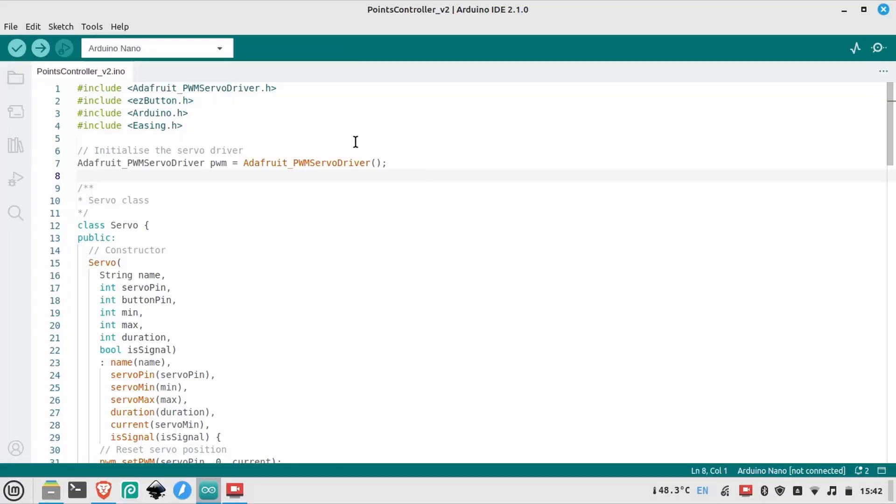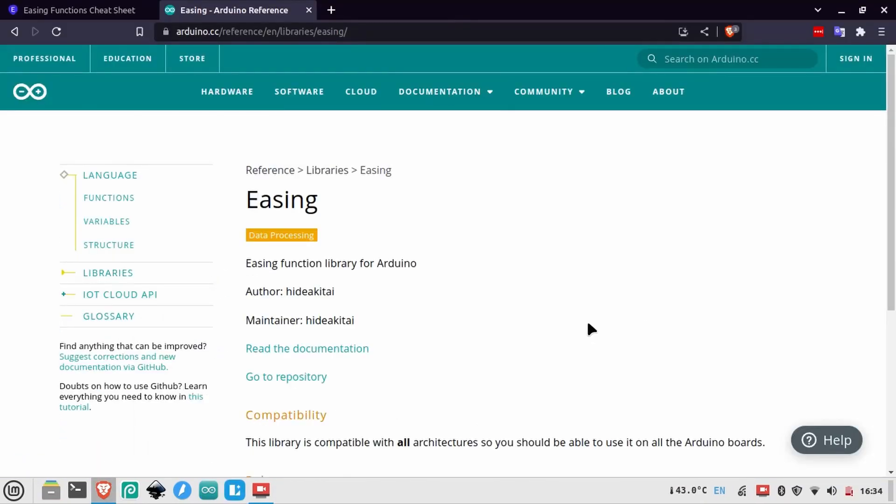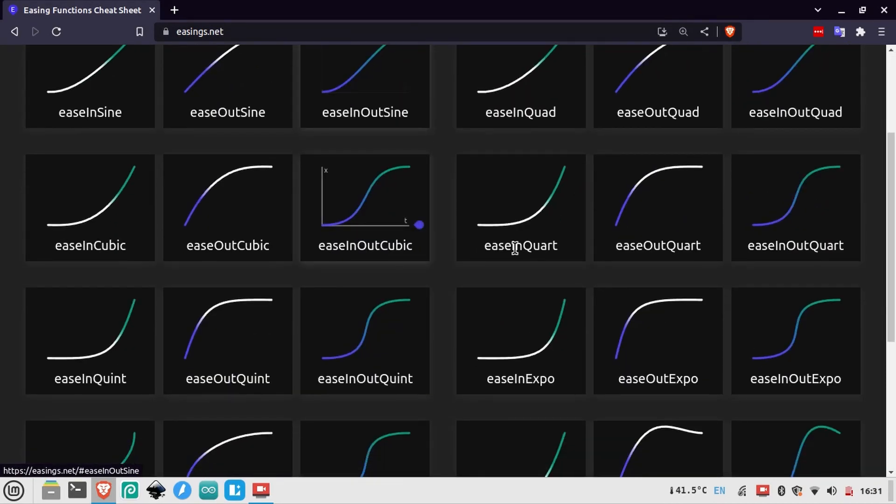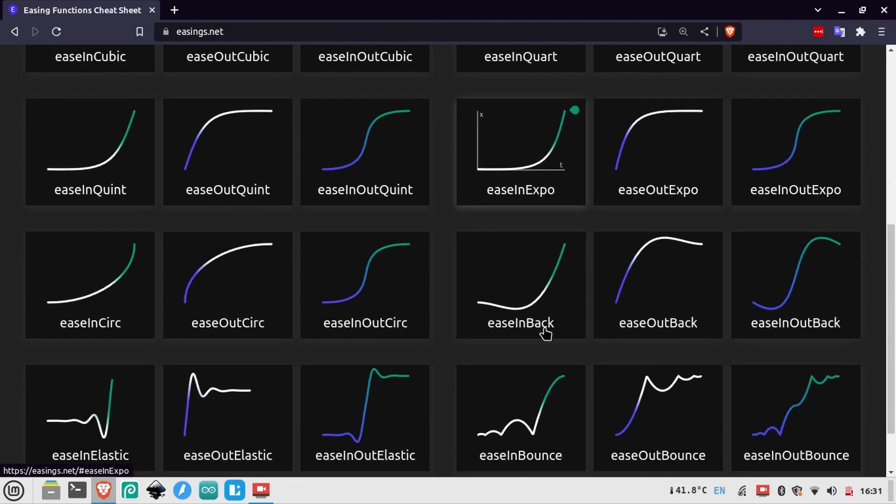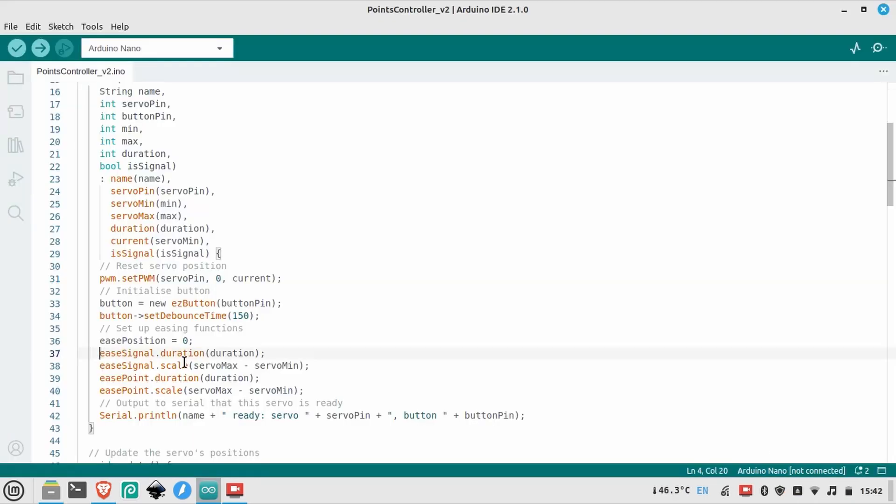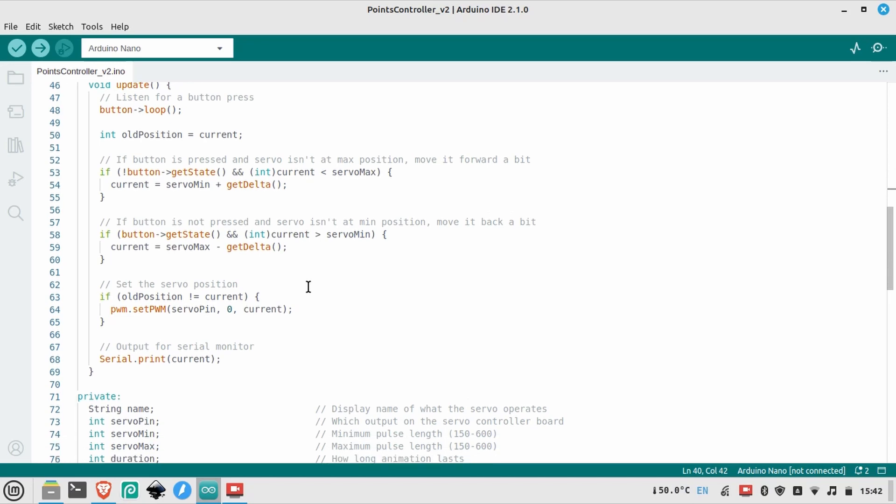So I went back to the code and integrated a third-party library called easing, which takes an input value and outputs a value that represents a position on a predefined curve. And there are lots of easing patterns available, including sine waves, exponential increments, elastic wobbles, and bounce. So instead of incrementing the servo position directly, which is what gave me the linear progression I started with, I can now apply a nice bounce to the servo's position, which is much more satisfying.